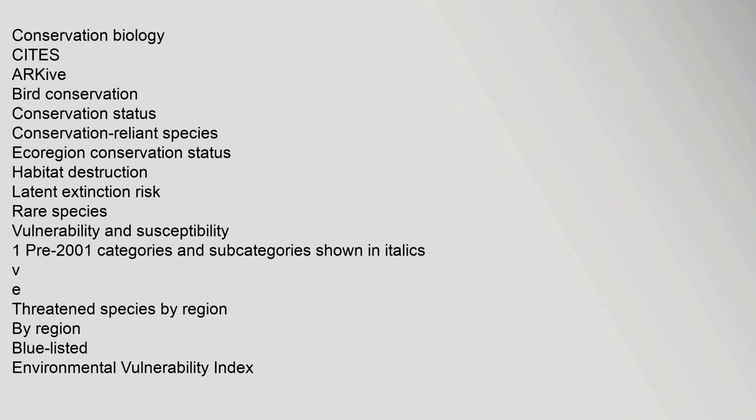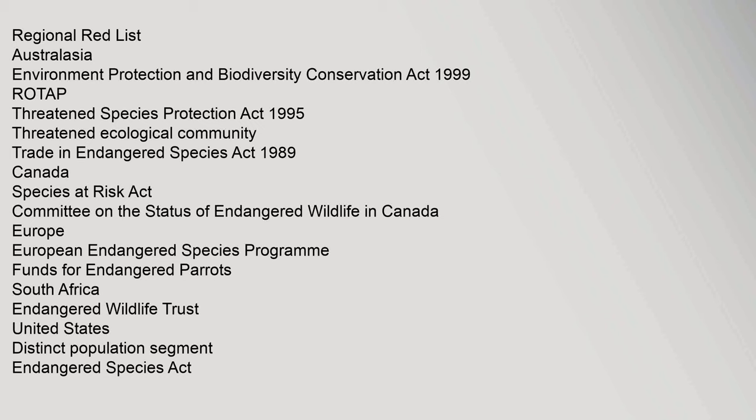Conservation Biology Sites: Archive Bird Conservation, Conservation Status, Conservation Reliant Species, Ecoregion Conservation Status, Habitat Destruction, Latent Extinction Risk, Rare Species Vulnerability and Susceptibility. Pre-2001 Categories and Subcategories shown in italics. Threatened Species by Region: Blue Listed, Environmental Vulnerability Index, Regional Red List, Australasia Environment Protection and Biodiversity Conservation Act 1999, ROTAP, Threatened Species Protection Act.